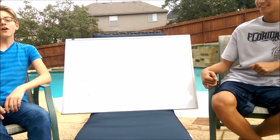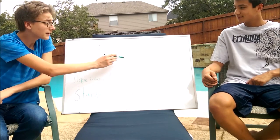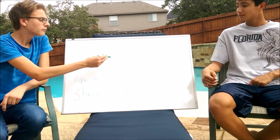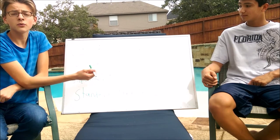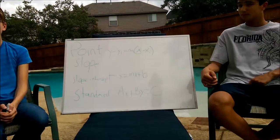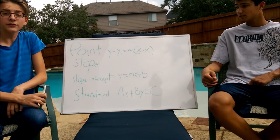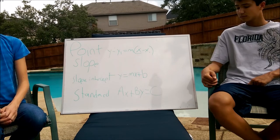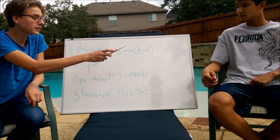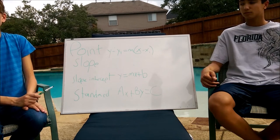Next we're going to be talking about point-slope. The equation for point-slope is y minus y1 equals m times the quantity x minus x1. The y1 is just a y from the equation. The m is equal to the slope and x1 is an x from the equation. So you take a set of points, put the y here, the x here, find the slope, put it here, and then you're able to solve the equation.